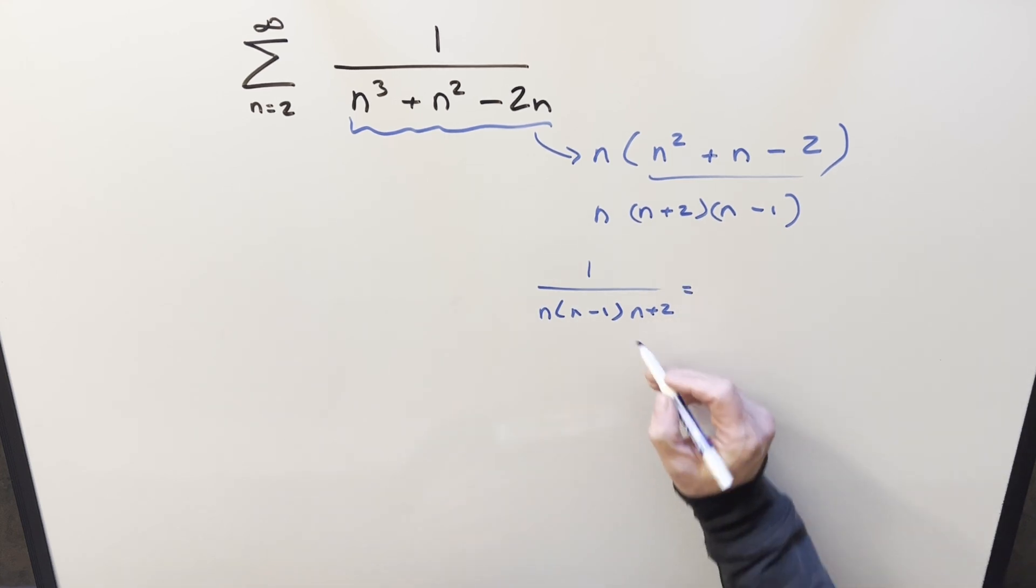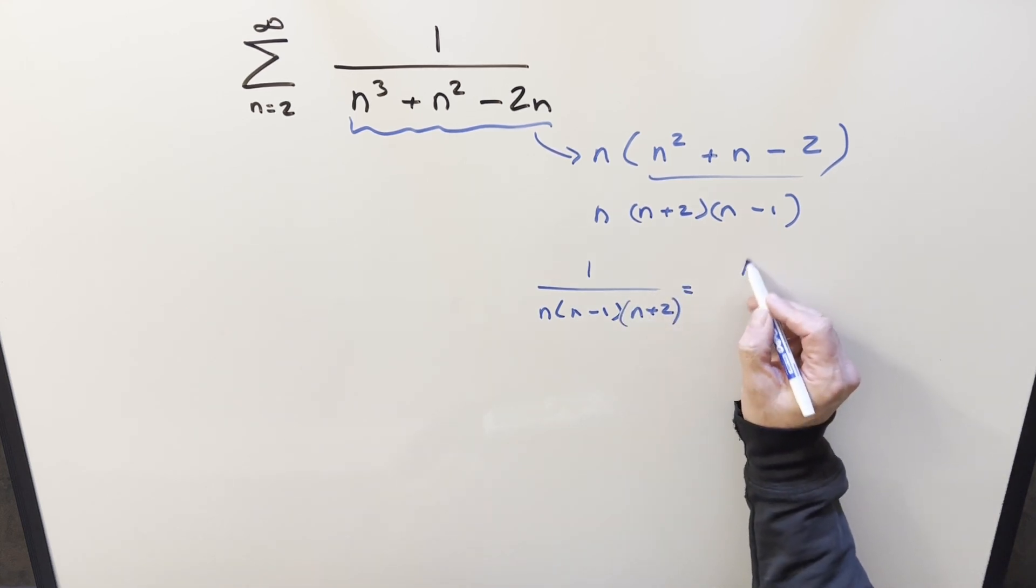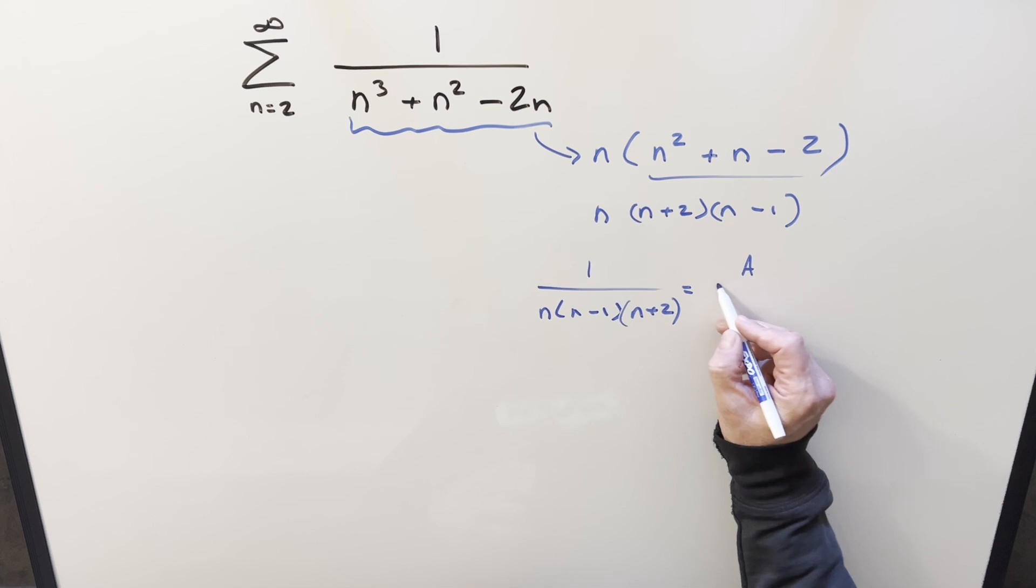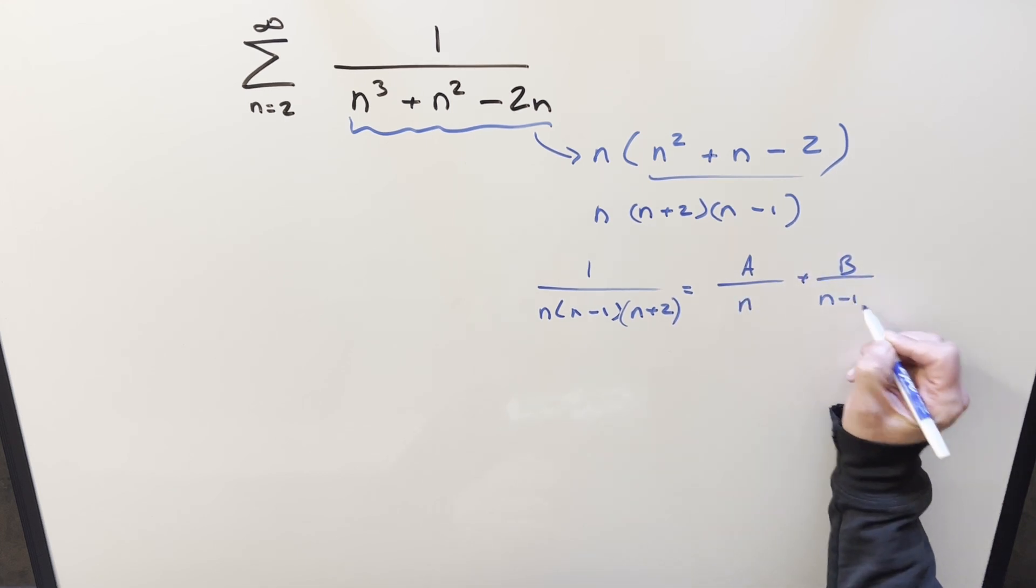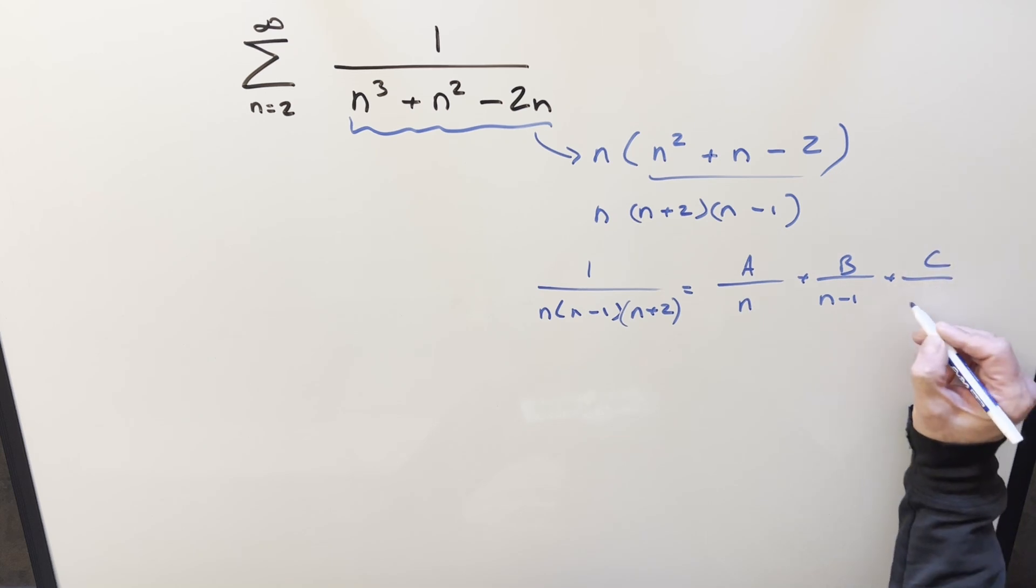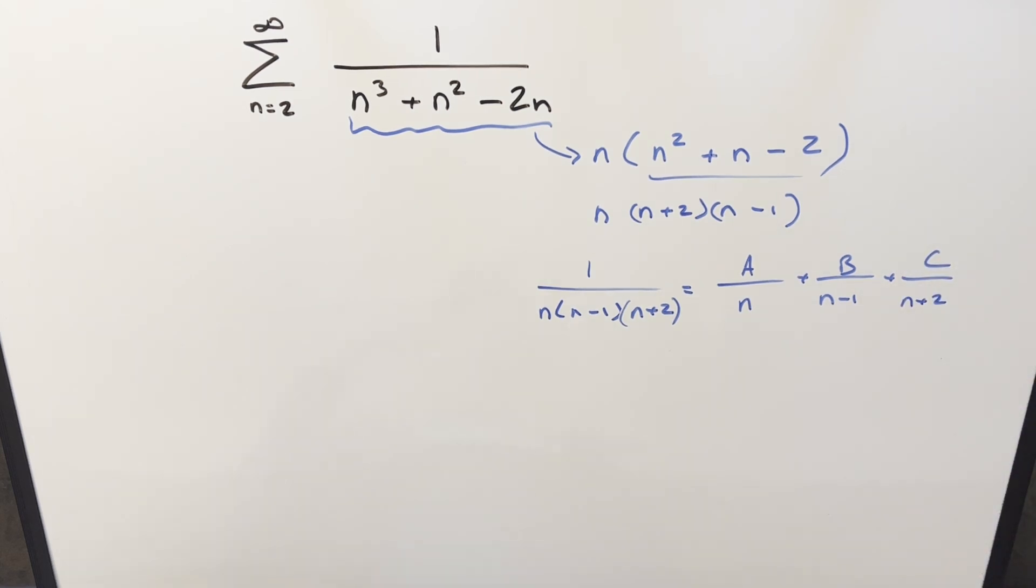But this thing can then be broken up with partial fractions, so breaking it up into three pieces, we can write it as A over n plus B over n minus 1 plus C over n plus 2. So now here, I'm going to skip over the partial fractions, but what you could do is the cover-up method. You plug a 0 in here, you plug a 1 in here, you plug minus 2 in here.